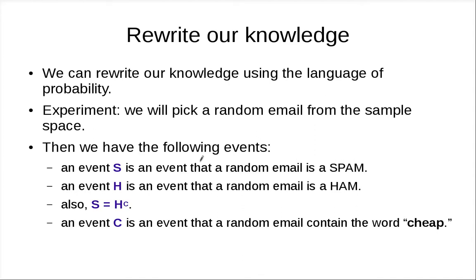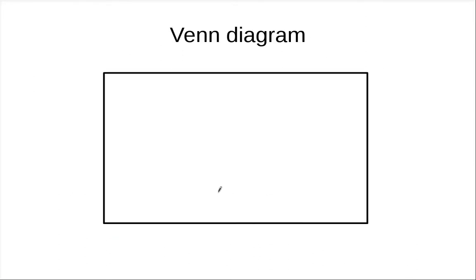We can rewrite our knowledge using the language of probabilities. We think of picking a random email from a sample space. There are three events we are interested in: event S — a random email is spam; event H — a random email is ham, which is not spam. These two events are mutually exclusive and their union is the sample space. We also have event C — a random email contains the word 'cheap.'